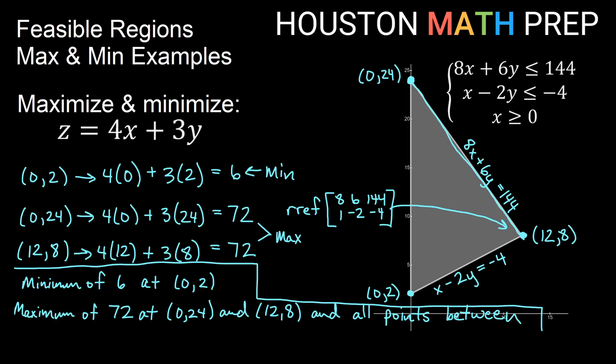When you have a tie for a max or a min at two vertices, both points are considered the max or min. And since we're dealing with a linear region — where all boundaries are lines — every point on the line segment between those two vertices also achieves that same maximum or minimum value.